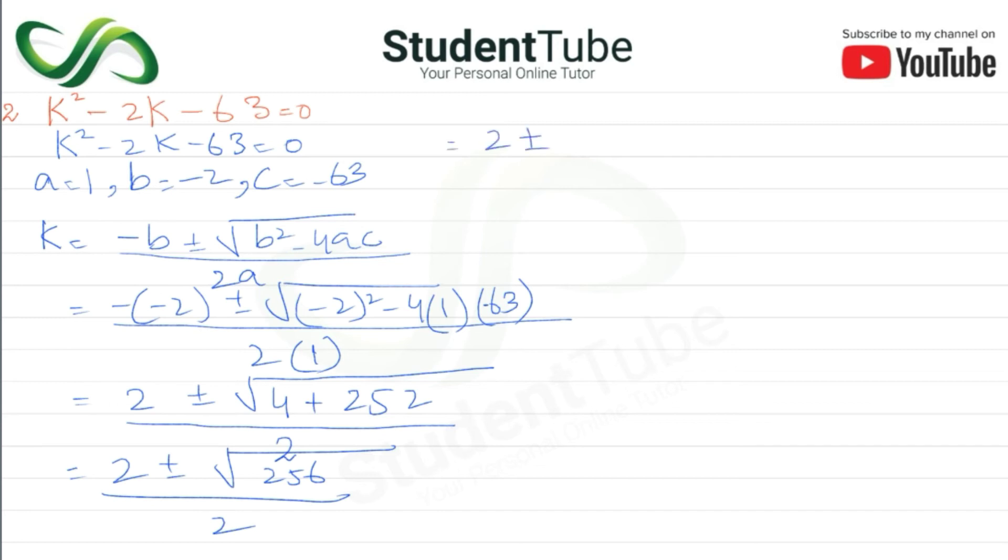2 times 2 times 2 times 2, 256 we have 2, then here 1 plus and minus, then the end of line draw, and one side plus plus and one side minus. So here k is equal to 2 plus 16 upon 2, and k is equal to 2 minus 16 upon 2.